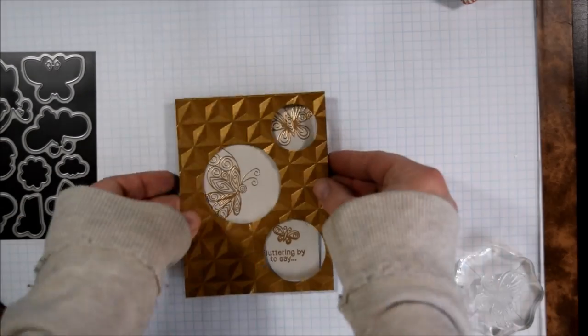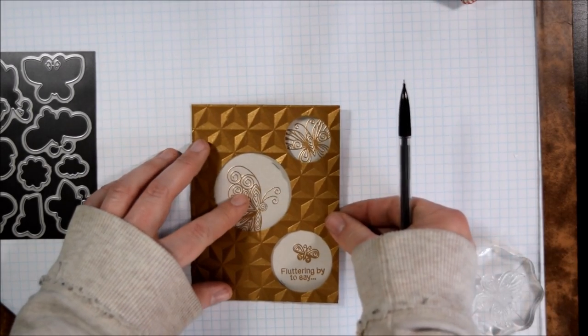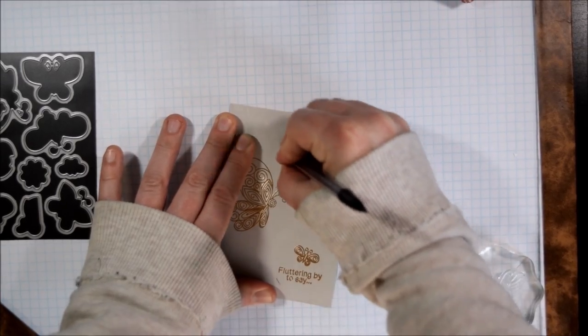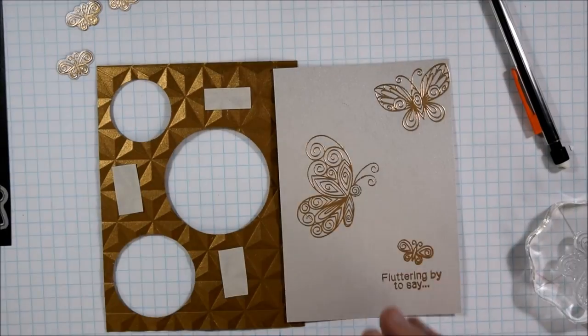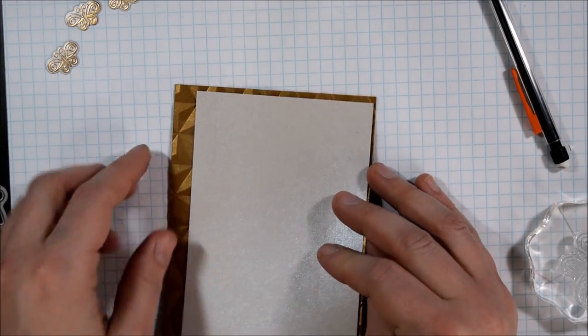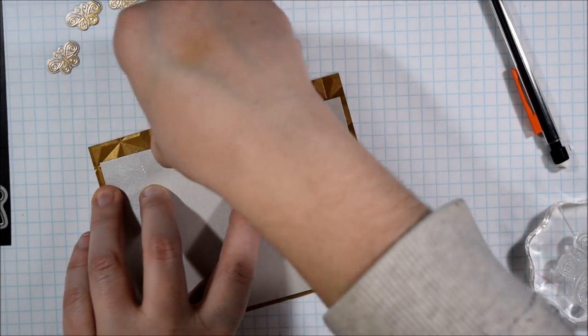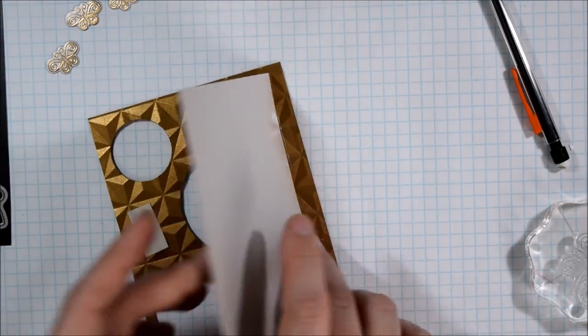Once I had all of the butterflies and the sentiments where I wanted them, I'm going to erase those little pencil marks that I made and now I'm ready to attach this silver panel onto the card. Basically what I did was just sort of line it up the way that I like it and put a little just scotch tape on there to make sure that the panel stayed where I wanted it.